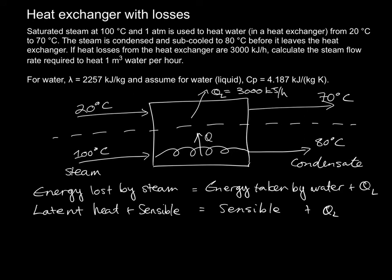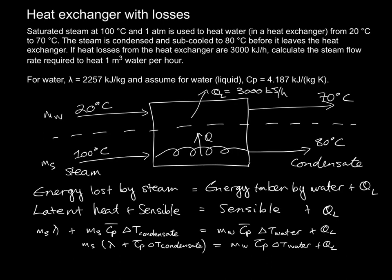So if we call the mass flow rate of steam M steam and we call this M water the balances work out roughly as follows. We've taken the latent heat expressed that in terms of the flow rate of the steam. We've taken the sensible heat and taken that with a constant Cp. The same on this side except that we've used the flow rate of water and the delta T of the water.